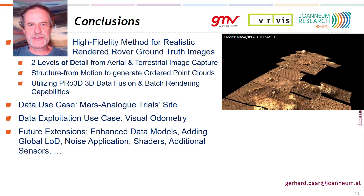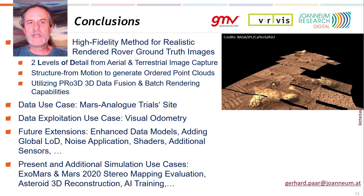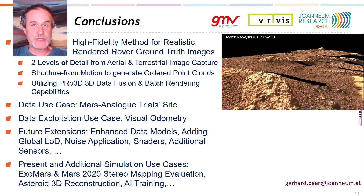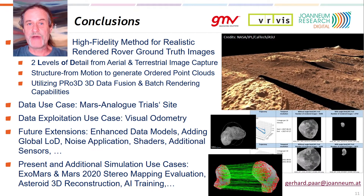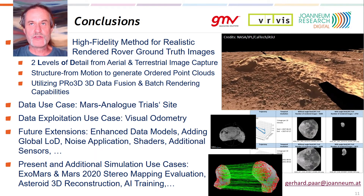We have a couple of extensions in mind, such as going beyond digital terrain models on the modeling front, adding at least one more level of detail, applying noise to the gained image data and their poses to explore robustness of the methods to be tested, elaborating on data presentation such as adding the use of shaders, or tackling additional sensors such as IMU coupled to the ground truth pose definition. The use cases are already manifold by our involvement in ExoMars and Mars 2020 imaging, as well as HERA. The mentioned AI training is a further promising aspect and we expect a few more to come.